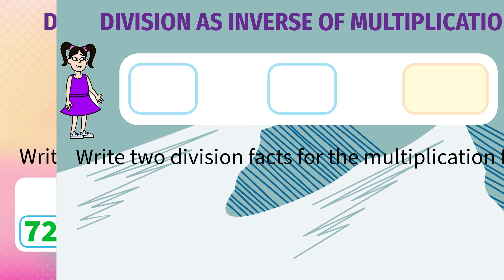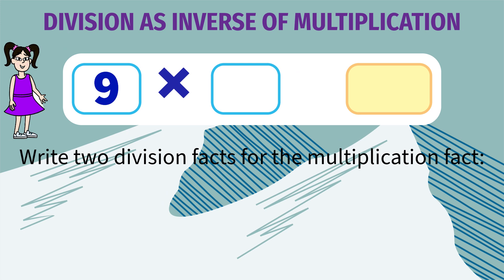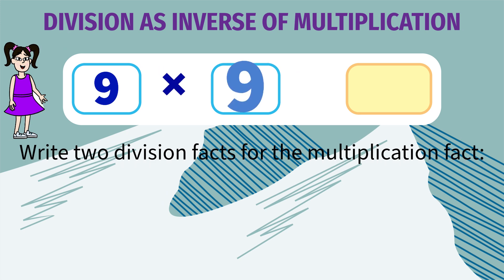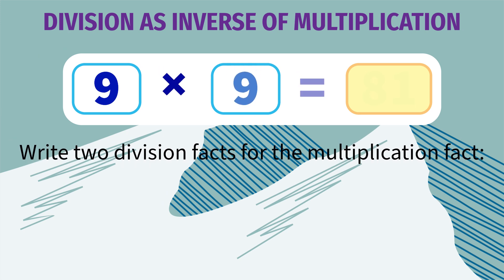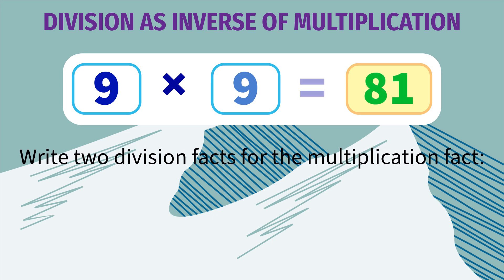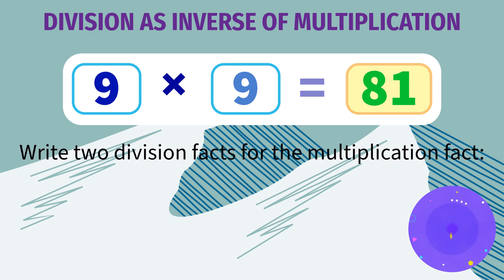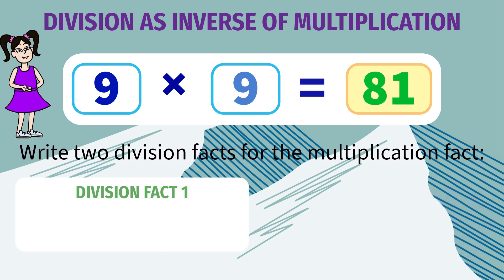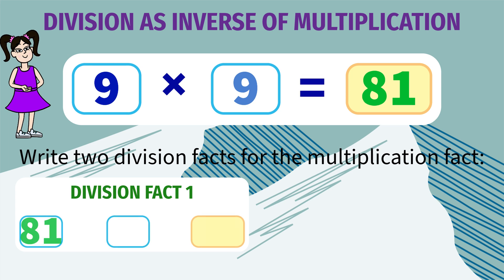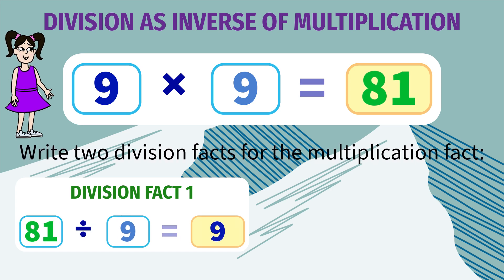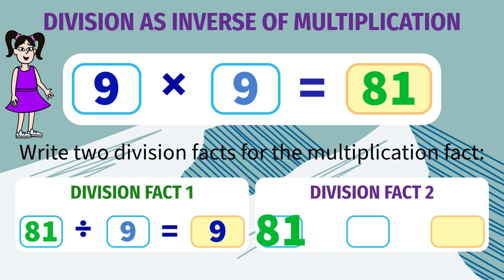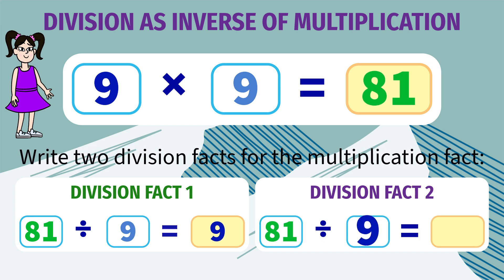Write two division facts for 9 into 9 equals 81. Here, the two division facts are 81 divided by 9 is 9, and 81 divided by 9 is 9.